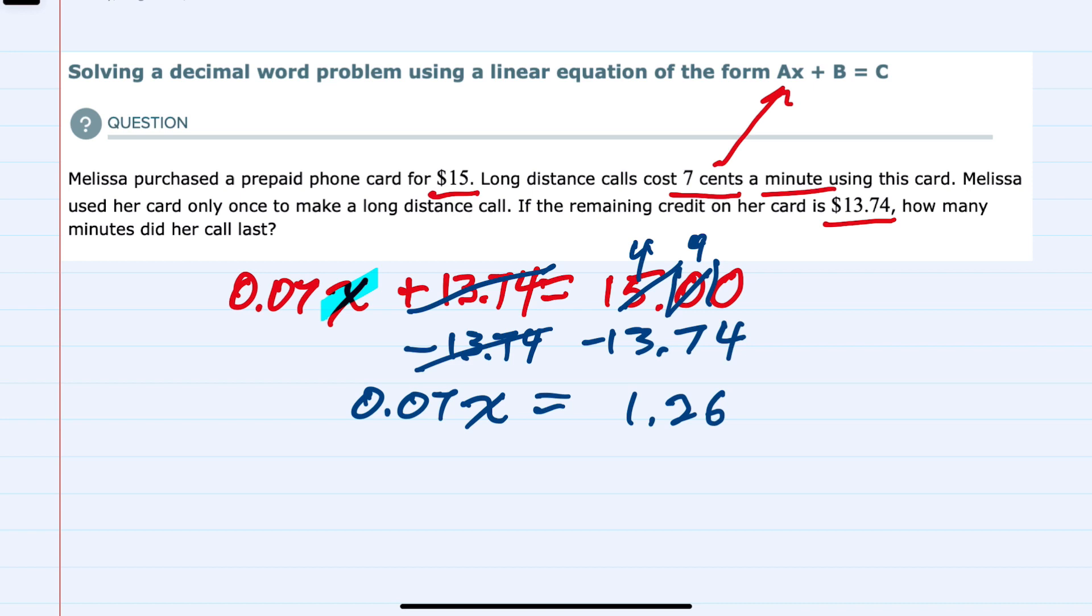Then our last step for solving this equation is to undo multiplication on the left hand side with division. We divide both sides by 0.07. Canceling out on the left gives me just x.